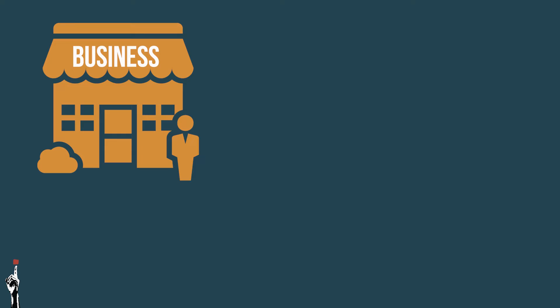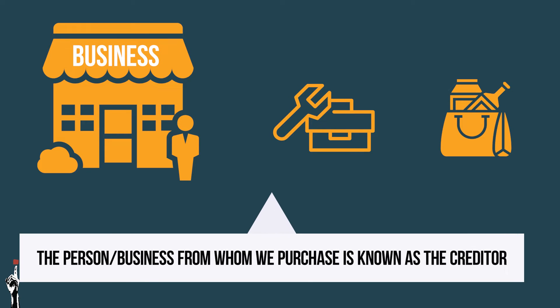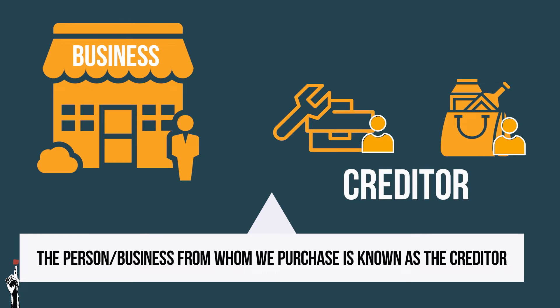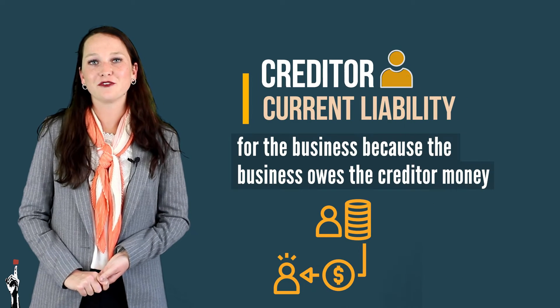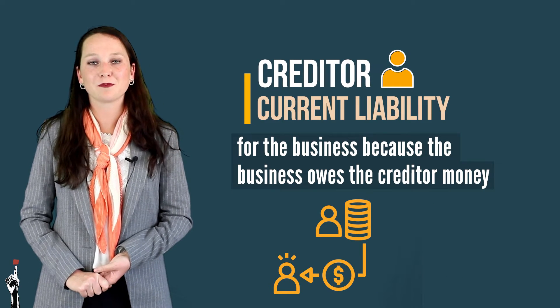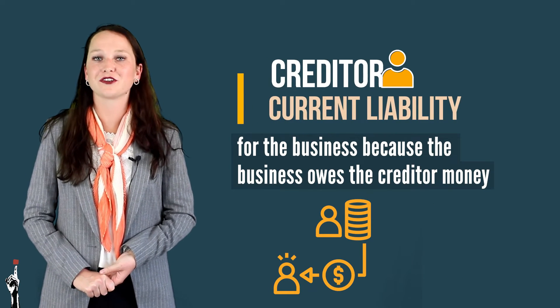When the business purchases goods, items or services on credit, the person or the business from whom we purchase is known as the creditor. A creditor is a current liability for the business because the business owes the creditor money.